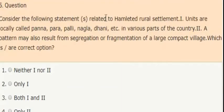Next question: consider the following statements related to hamleted rural settlement. First statement: units are locally called panna, para, palli, nagla, dhani, etc. in various parts of the country. Second statement: a pattern may also result from segregation or fragmentation of a large compact village. Which are the true options? Options: neither 1 nor 2, only 1, both 1 and 2, only 2. The correct answer is option 2. Only the first statement is correct.